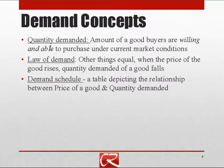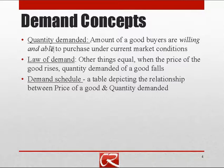There are three concepts on this slide. The quantity demanded is the amount of a good that buyers are willing and able to purchase under current market conditions. Current market conditions would include the price of the good, their income levels, the price of related goods, their expectations about future prices, and all sorts of other things.